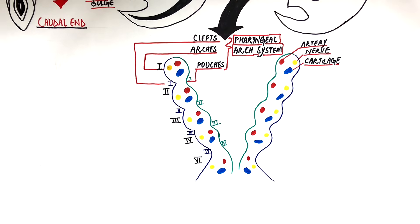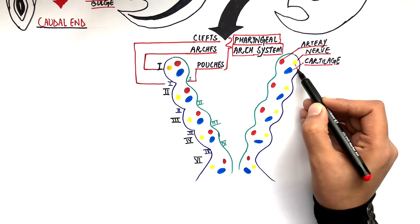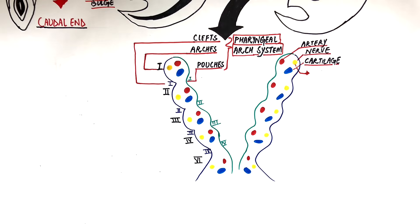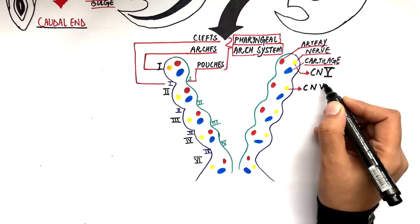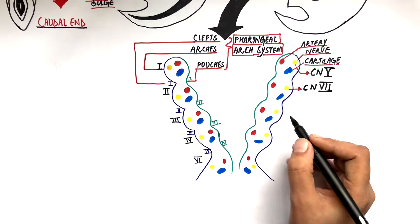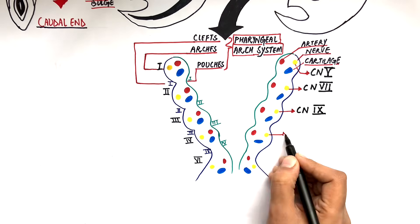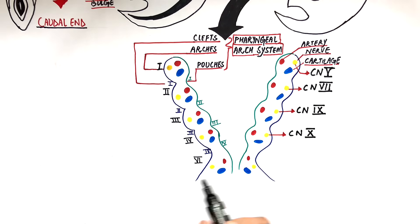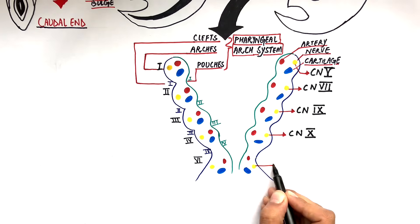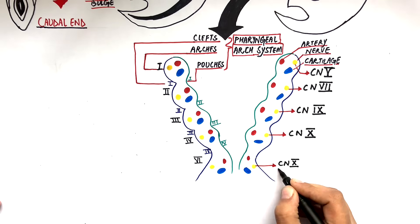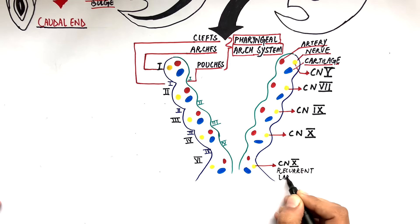The nerve supply of the first pharyngeal arch is the fifth cranial nerve, or the trigeminal nerve. The facial nerve innervates the second arch. The third arch is innervated by the glossopharyngeal nerve, and the fourth arch by the vagus nerve. The sixth arch is innervated by the recurrent laryngeal nerve, a branch of the vagus nerve.